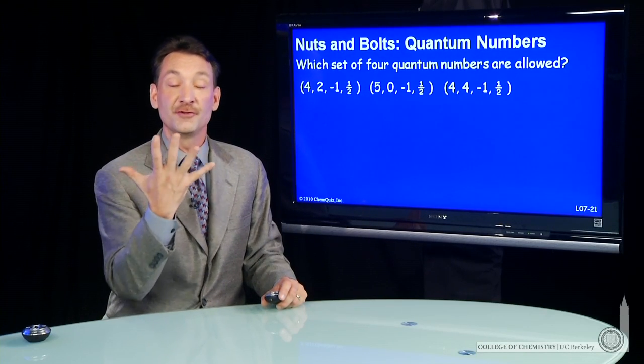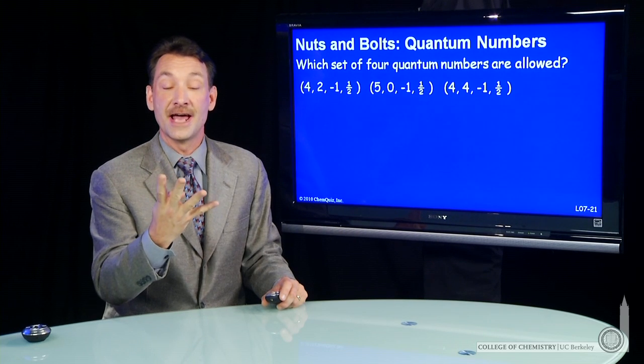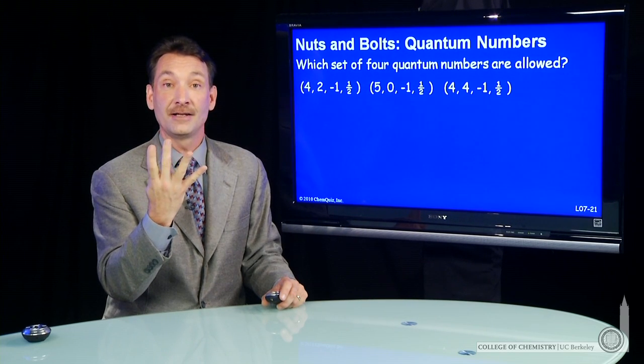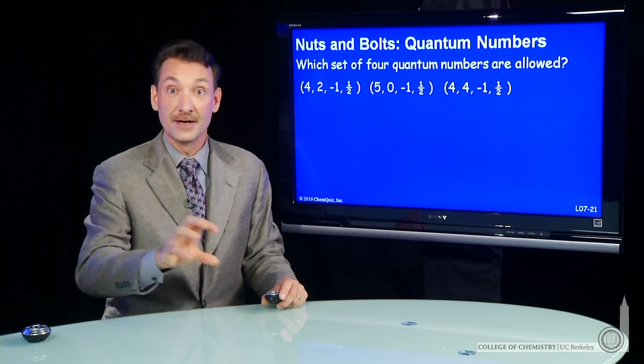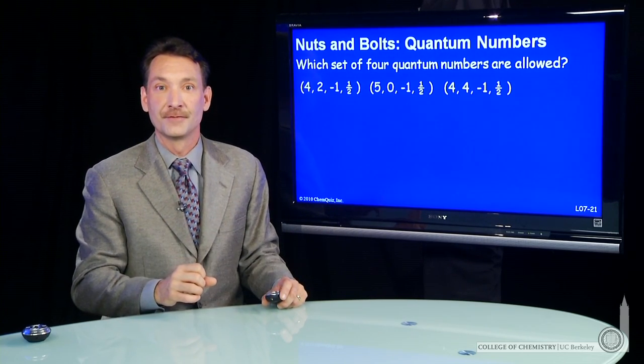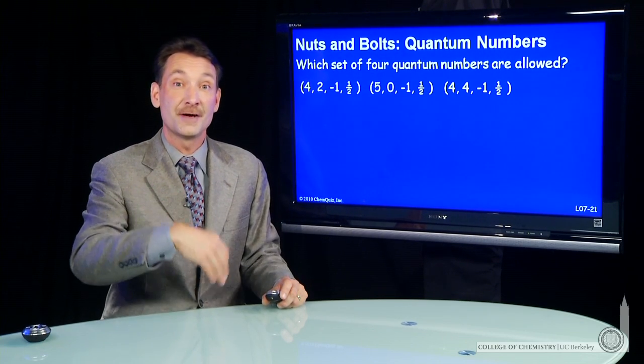Let's look at sets of four quantum numbers. When I give you four quantum numbers, I define an electron in an atom. I give you an n, an l, an m sub l, and an m sub s. That tells you where in the atom you'll find that electron.